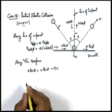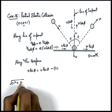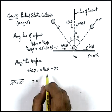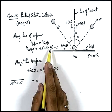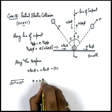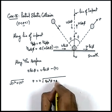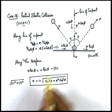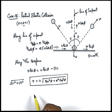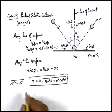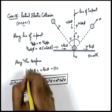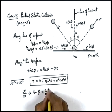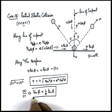If we square equations one and two and add them, on the left-hand side we get v squared times (cos squared phi plus sin squared phi), which equals 1. So we get v equals u times the square root of (sin squared theta plus e squared cos squared theta). This gives the relation between final and initial velocity after and before collision. We can also find the angle of reflection phi by dividing equation two by equation one: tan phi equals (1/e) tan theta. This is the relation between angle of reflection and angle of incidence.